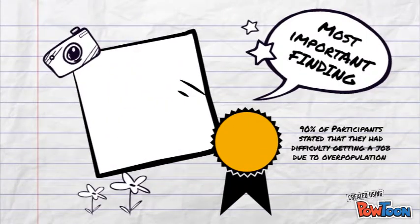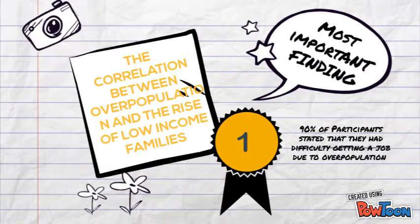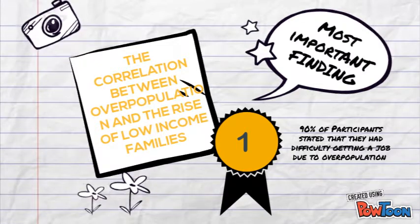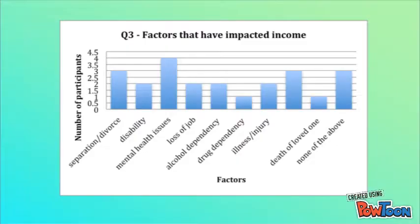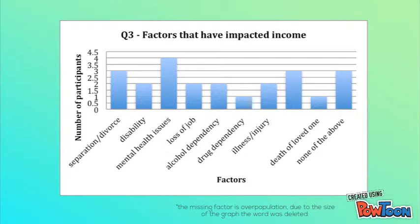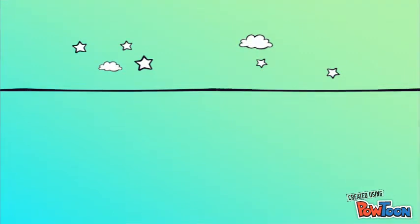The most important finding from the study was the correlation between the overpopulation of the city of Casey and the rise of low-income families. It was found that 90% of participants stated that they had difficulty getting jobs due to overpopulation of the area. It was ranked as the second most prevalent factor that has impacted household income in the city of Casey.